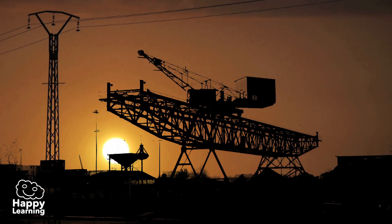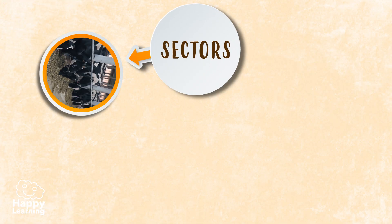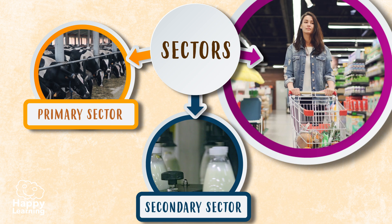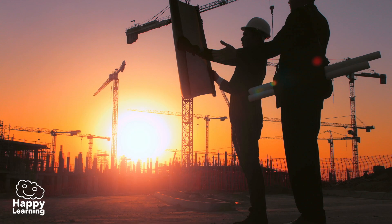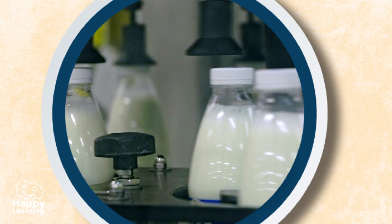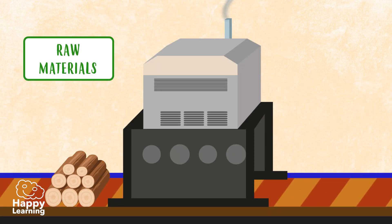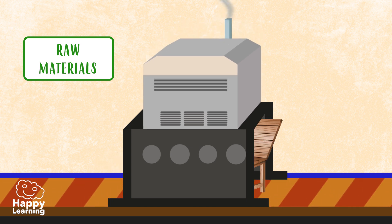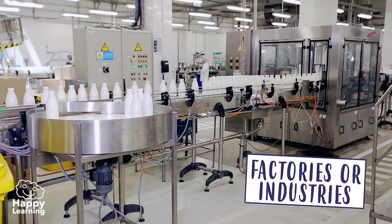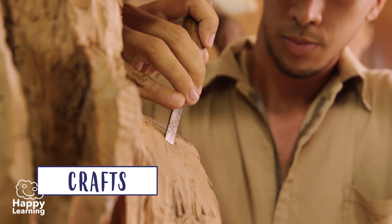Hello, happy friends! As you already know, jobs are divided into three sectors: the primary or production sector, the secondary or manufacturing sector, and the tertiary or service sector. Today we're going to work on the secondary sector. The secondary sector has jobs which transform raw materials into elaborated products. The main activities which compose this sector are factories or industries, crafts, and constructions.